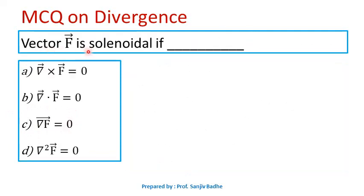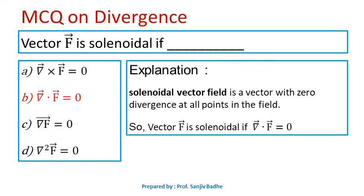Next question: vector f-bar is solenoidal if — options are: a) curl of f-bar is 0, b) divergence of f-bar is 0, c) gradient of f-bar is 0, d) del-squared f-bar is 0. A solenoidal vector field is defined as a vector field with zero divergence at all points in the field. Therefore, for f-bar to be solenoidal, divergence of f-bar must be 0, so option B is correct.